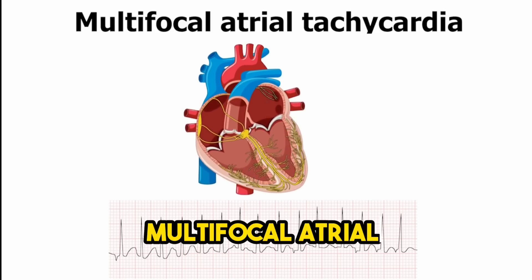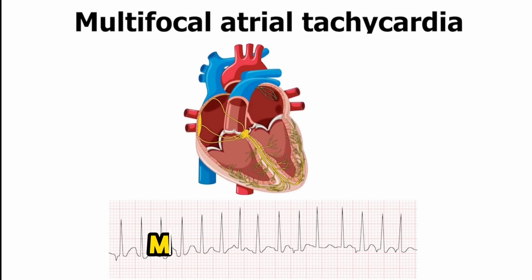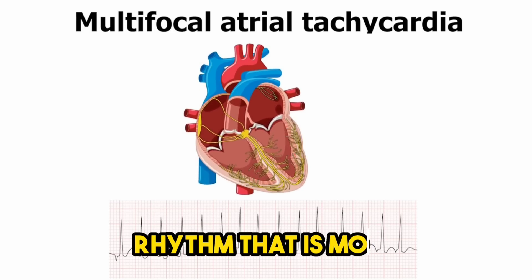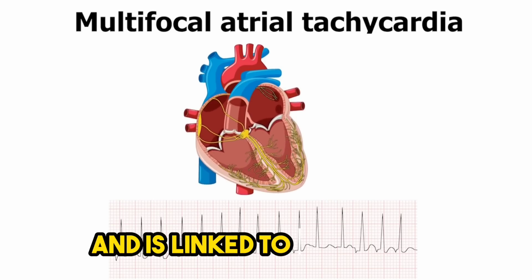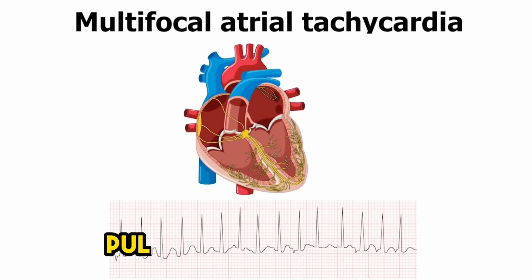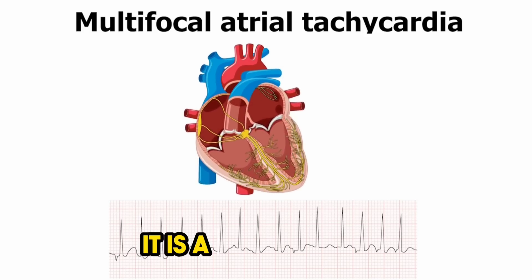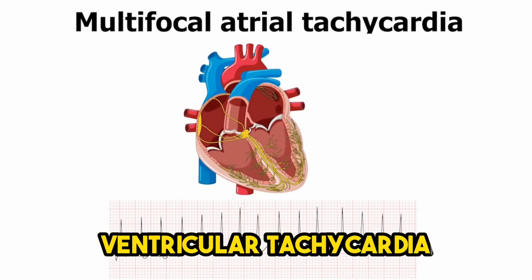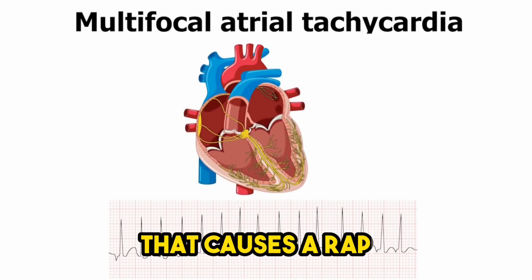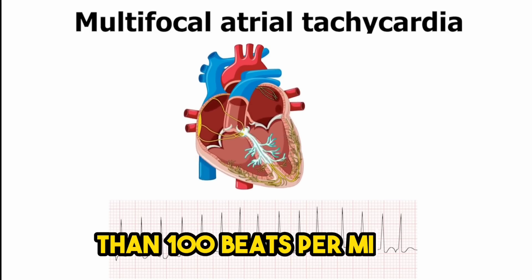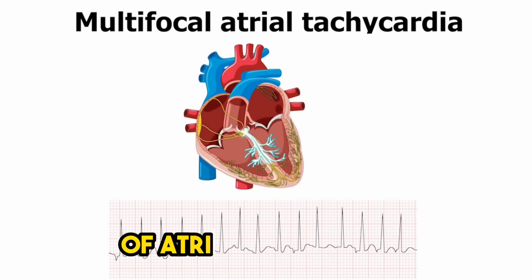Multifocal atrial tachycardia, or MAT, is a type of irregular cardiac rhythm that is more common in older people and is linked to worsening of chronic obstructive pulmonary disease, or COPD. It is a kind of supraventricular tachycardia that causes a rapid and irregular heartbeat. Your heart rate is higher than 100 beats per minute, as with other types of atrial tachycardia.